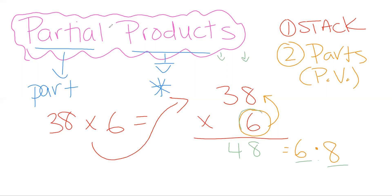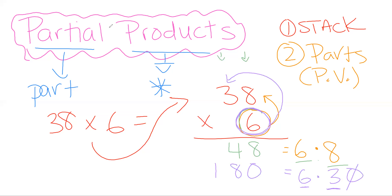Now I'm going to take this 6 and multiply it by the 3 — but remember, it's not just a 3, it's a 3 in the tens place, so it's really a 30. Six times 30 is 180. Now I can just add my numbers together: 48 plus 180 gives me 228. So 38 times 6 equals 228.